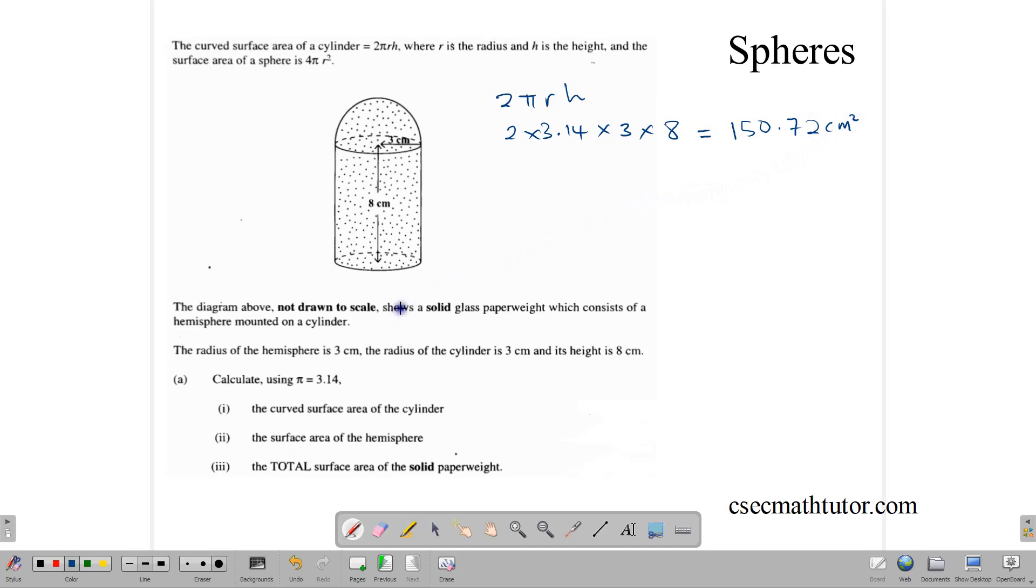So that is part one, the curved surface area of the cylinder, that is, the surface area of the round part of the shape.